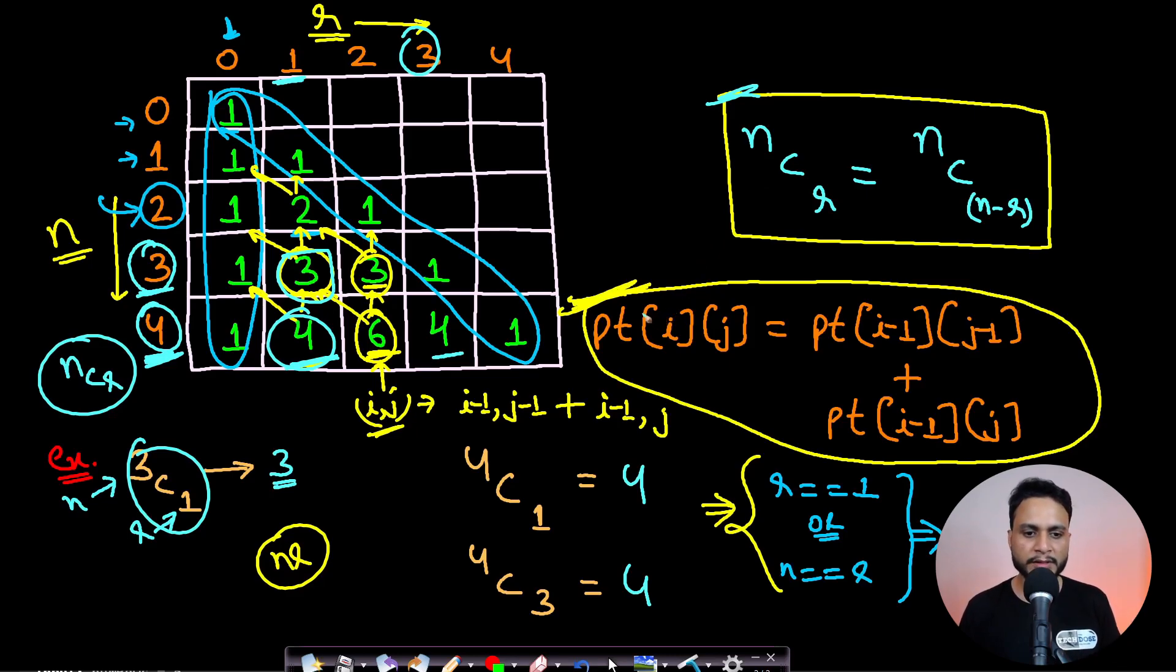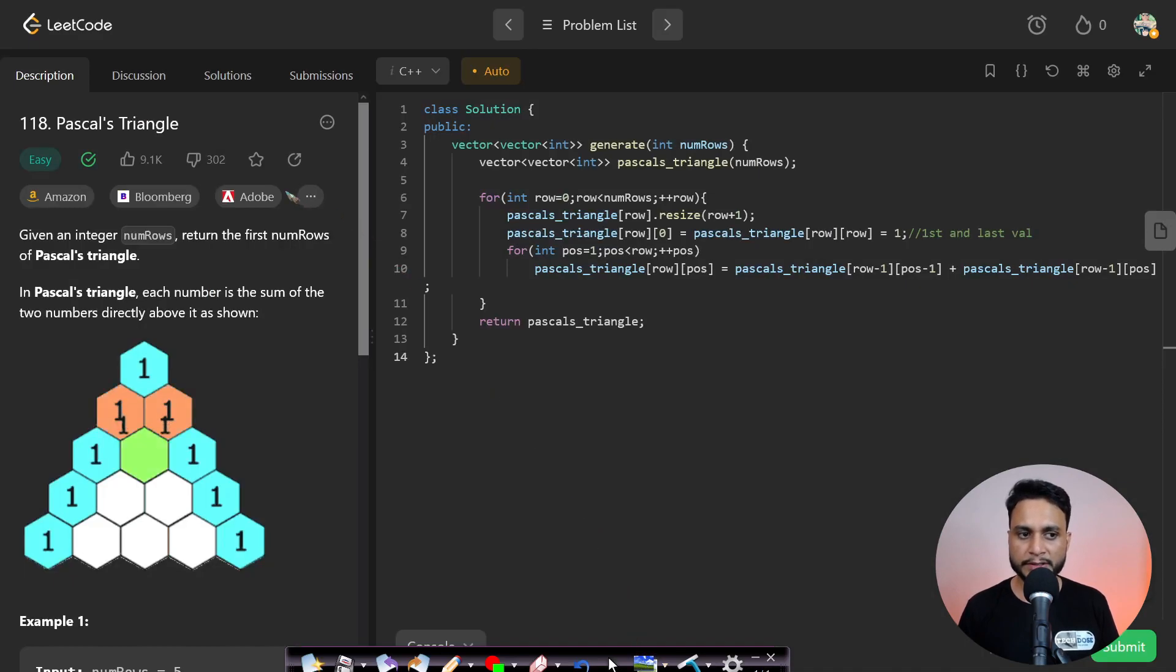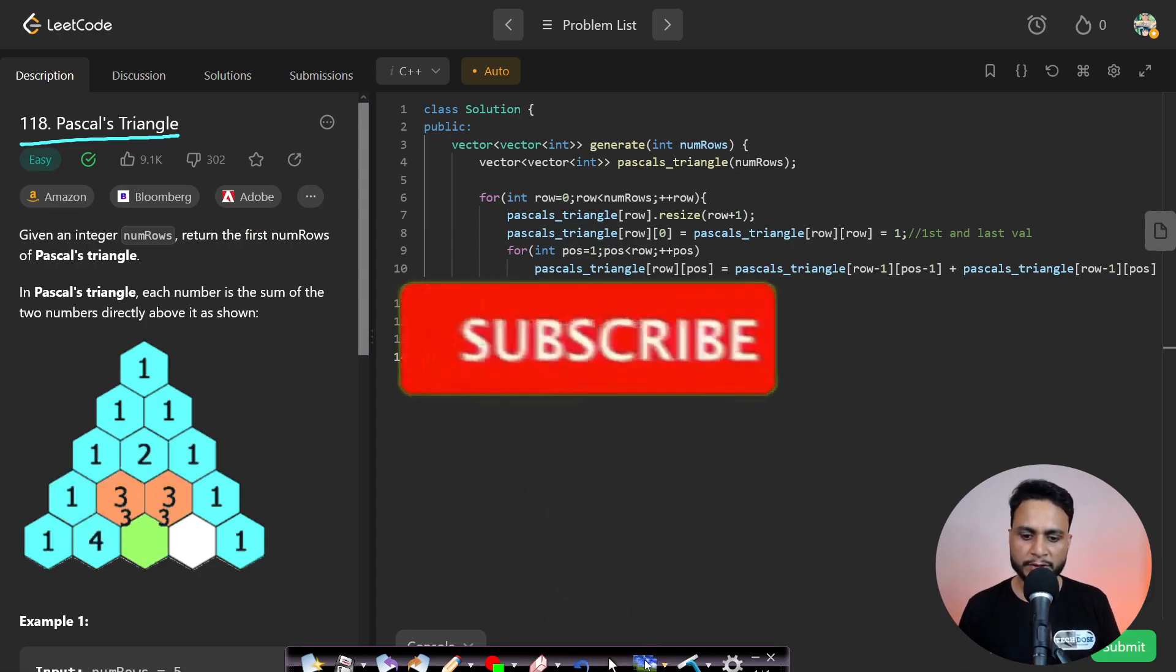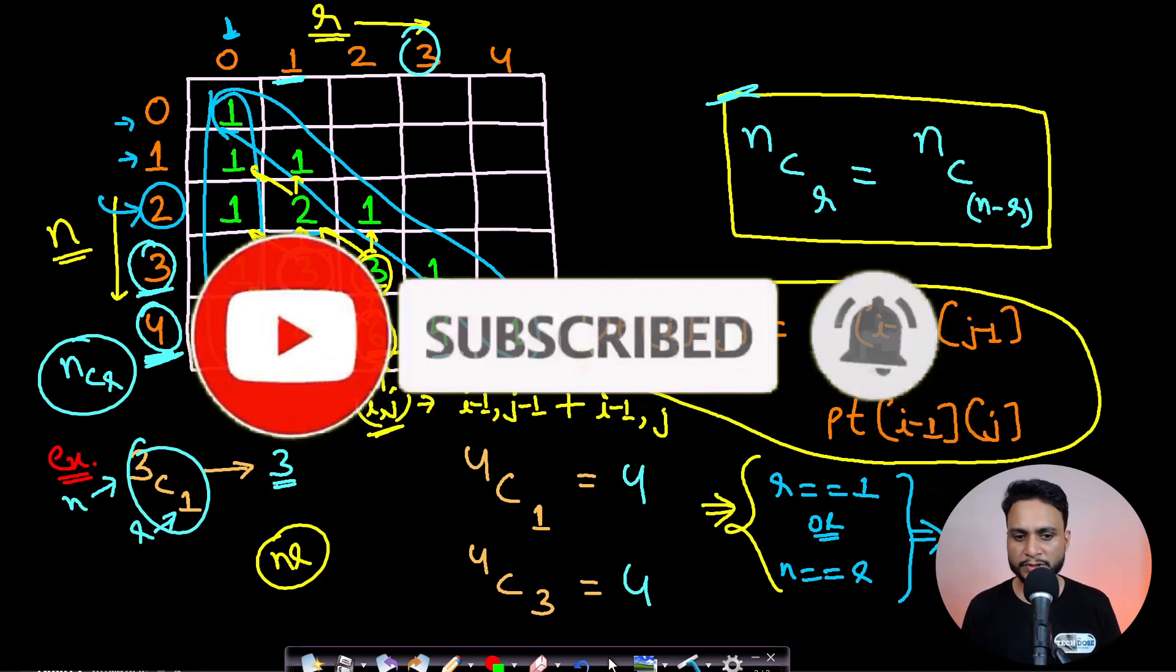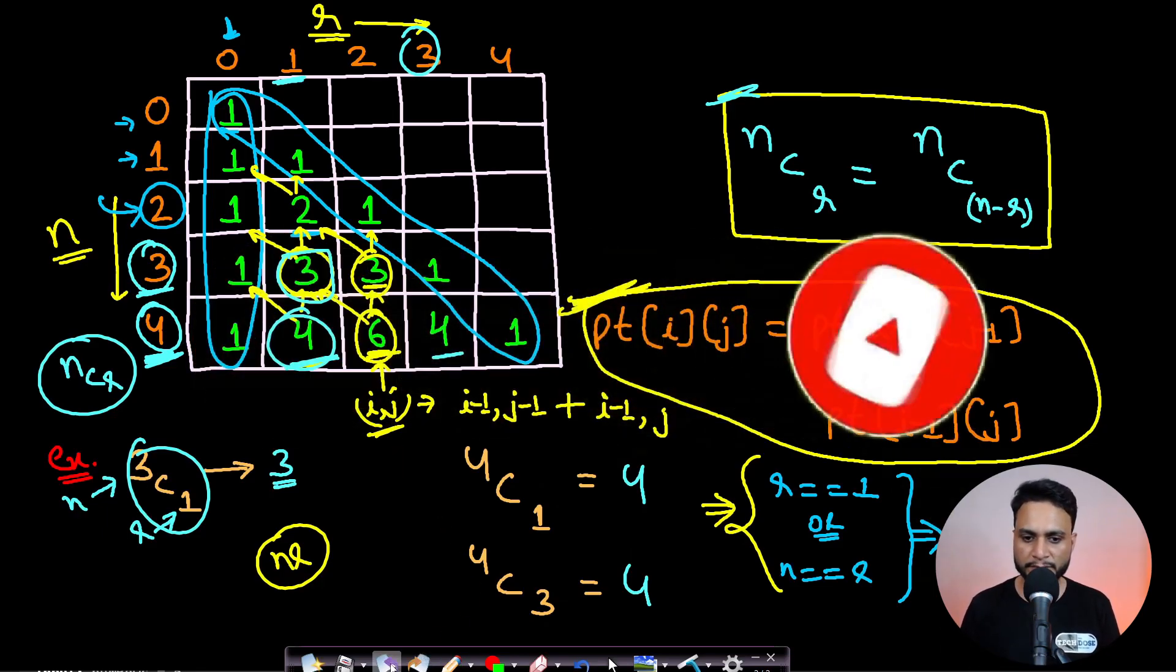I hope you now know how to find the nCr values by using Pascal's triangle, which is a very easy method. You can go ahead and practice LeetCode number 118, which will be about implementing how to find Pascal's triangle. I hope this video helped. Please like our video and subscribe to our channel to watch more programming videos. See you guys in the next video, thank you.